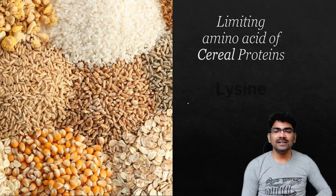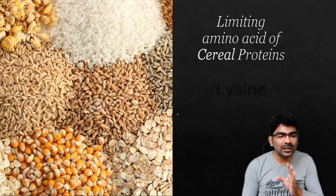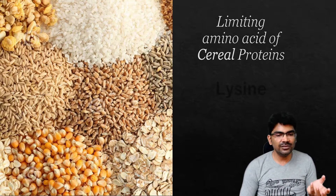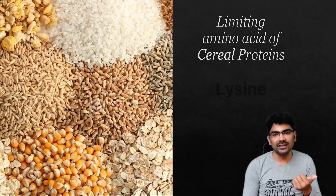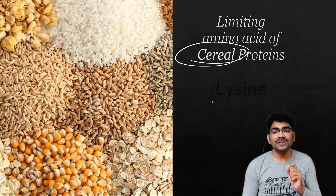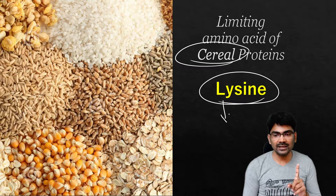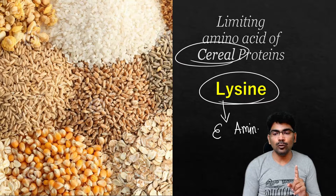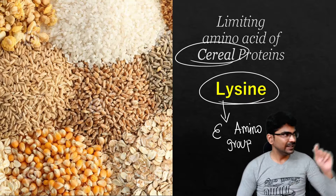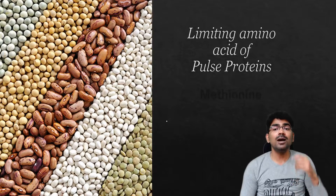The limiting amino acid of cereals — rice, wheat — is lysine. Lysine has an epsilon amino group; remember that also. Cereals are one group, and the other group will be pulses.